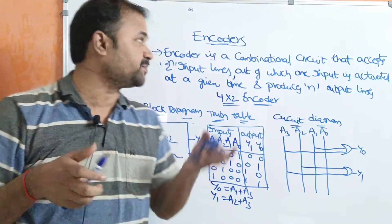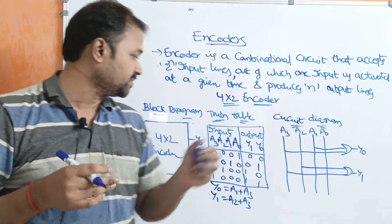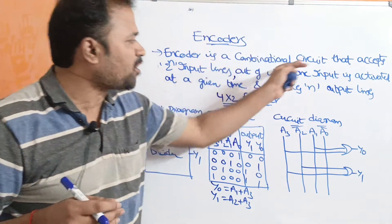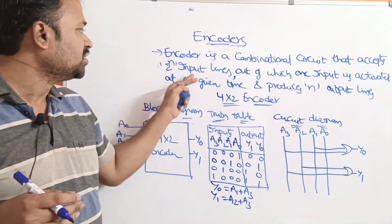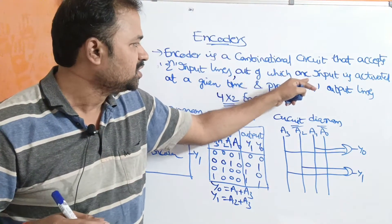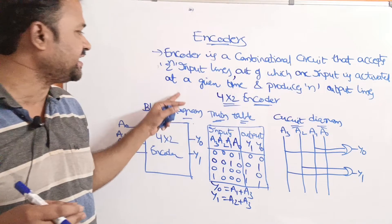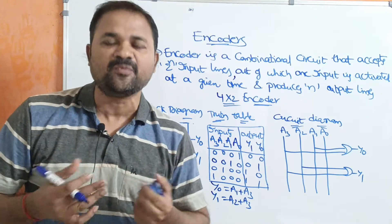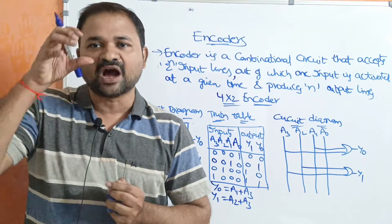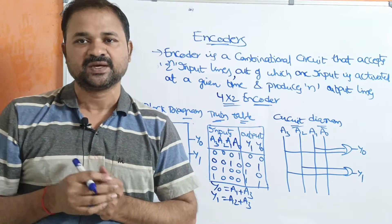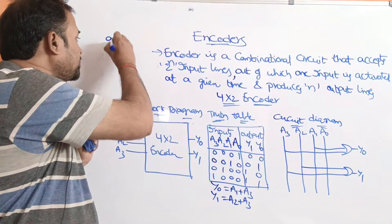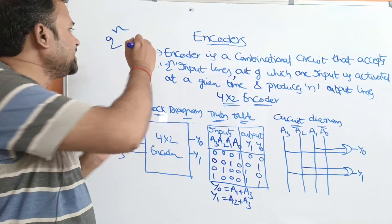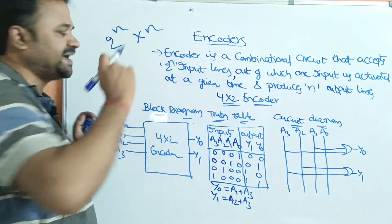In this class, we are going to discuss about introduction to encoder as well as 4 by 2 encoder. An encoder is a combinational circuit — the output depends only on the present input. It accepts 2^n input lines, out of which only one input line is activated at a given time, and produces n output lines.